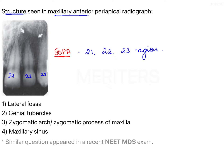If we observe well, we can find an ill-defined or diffuse periapical radiolucency present in relation to the maxillary lateral incisor. So what is this structure? The options are: lateral fossa, genial tubercles, zygomatic arch or zygomatic process of maxilla, and maxillary sinus.